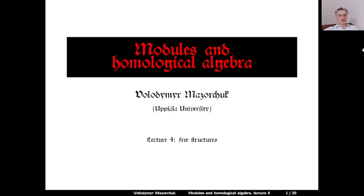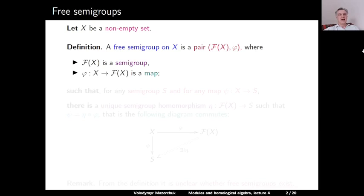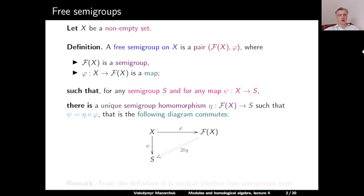Let us start with the definition of a free semigroup. Let X be a non-empty set. A free semigroup on X is a pair consisting of a semigroup F(X) and a map φ from X to F(X). This pair must satisfy: for any semigroup S and any map ψ from X to S, there exists a unique semigroup homomorphism η from F(X) to S.